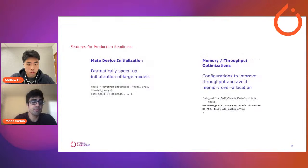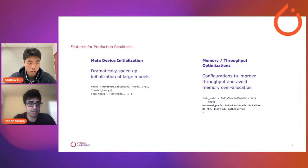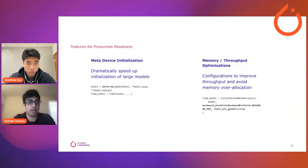We've also built initialization on the meta device, meaning users can initialize FSDP models without first initializing the local model on CPU or GPU. This is done through the deferred init API — the user creates a model wrapped with the deferred init API, which does not initialize it on CPU or GPU. When passed into FSDP, FSDP initializes the model layer by layer as parameters are sharded, dramatically speeding up initialization time for large models. Finally, several memory and throughput optimizations: a backward prefetch function to overlap communication and computation in the backward pass, and a rate limiter enabled with the limit_all_gathers flag to avoid memory over-allocation.